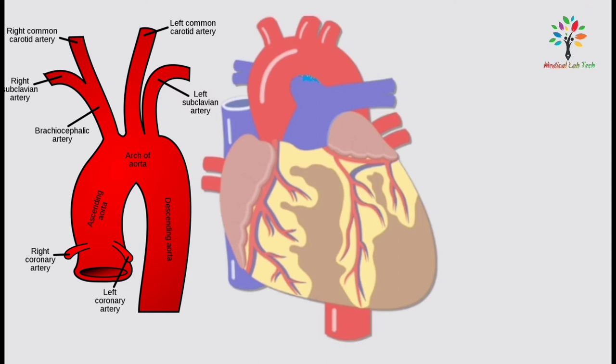The second branch is the left common carotid artery, which supplies blood to the neck and head. The third branch is the left subclavian artery, which supplies blood to the left upper limb.